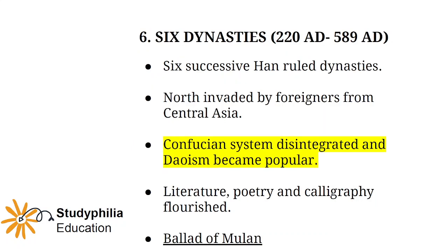After the Han dynasty, six dynasties succeeded it in ruling China. The north was invaded by foreigners from Central Asia, the Confucian system disintegrated, and Taoism became more popular. Literature, poetry, and calligraphy flourished during this period. The Ballad of Mulan is also believed to have been written during the six dynasties — it is the oldest known version of Mulan's story, comprising folk songs from the northern dynasties of China.